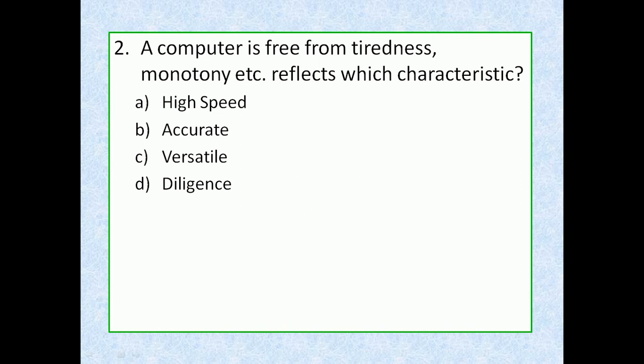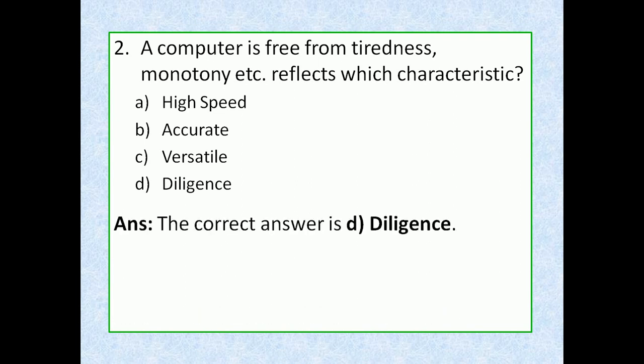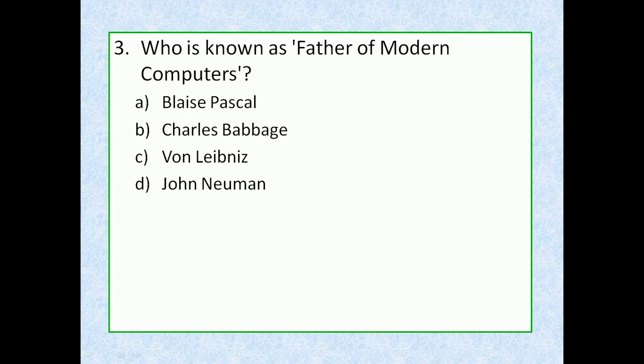Question 2: A computer is free from tiredness, monotony, etc. — this reflects which characteristic? Option A: high speed, option B: accuracy, option C: versatile, option D: diligence. The correct answer is option D, diligence. Unlike human beings, a computer is free from monotony, tiredness, and lack of concentration, and can work for hours without creating any errors. This characteristic is known as diligence.